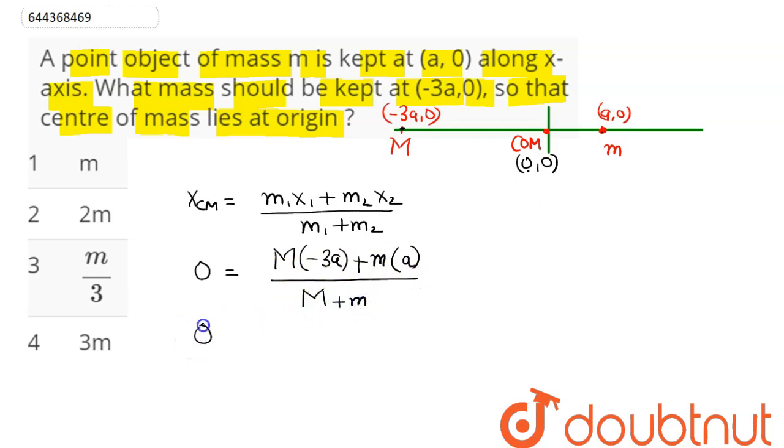Now, on cross multiplication, this becomes 0. This here is -3aM and this here is am. So, we can say 3aM value comes out to be equal to am.